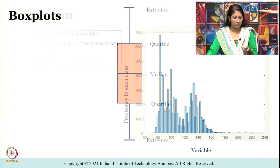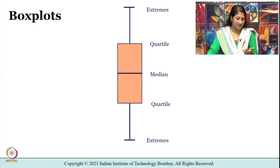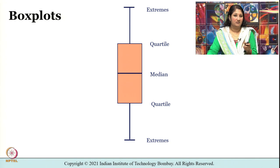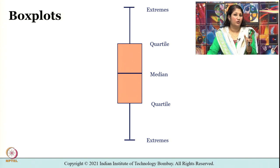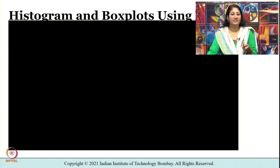Moving on, we have box plots. What you see on screen is a typical box plot. To perform exploratory data analysis (EDA), we have several plots by which we can summarize data very quickly. The box plot gives a graphical representation of the median (the middle horizontal line), the quartiles (the top and bottom horizontal lines), and the extremes represented by whiskers that extend from the plot. Let us see how to achieve this in Python.